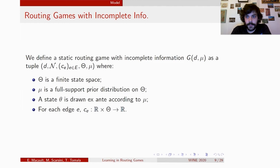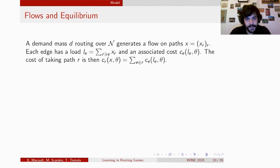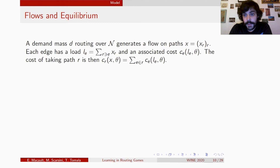This model transfers smoothly to an incomplete information framework with the following additions. We add capital Theta, a finite state space, and mu, a full support distribution on Theta. At the beginning of the game, one state of the world is drawn ex-ante according to this distribution. For each edge E in the graph, the cost function C_e depends both on the mass of agents using the edge and on the state of the world. We note such a game G(D, mu), as its equilibrium only depends on the demand mass and the prior distribution. When demand routes over the graph, it generates a flow on paths x — a splitting of demand over paths — which in turn generates a load on each edge, equal to the sum of flows of every path containing that edge, yielding a cost C_e(L_e, theta) for that edge.